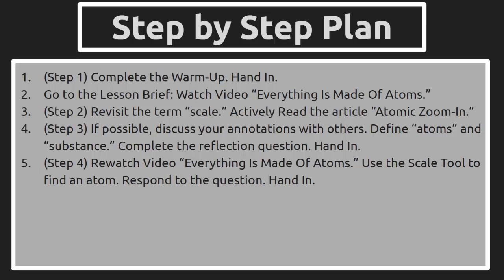You've probably done active reading numerous times at this point, but we want to annotate and take notes in the article so we can refer back to them later. Step three: if possible, discuss your annotations with others — whether that's somebody in your family, through email, or through social media. If not, sit and ponder it for a while. Then they define the words atoms and substance, two more terms you need to be comfortable with using throughout the unit. Complete the reflection question at the bottom and hand it in.